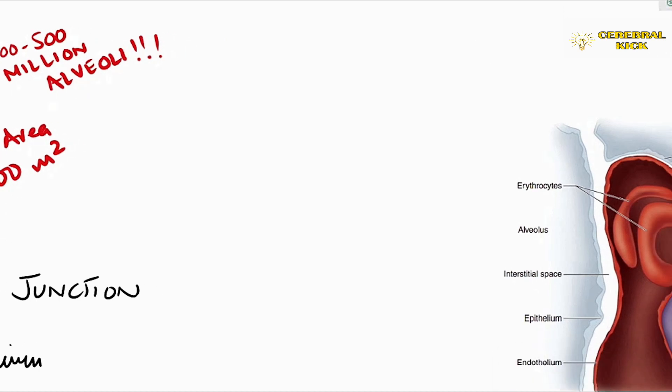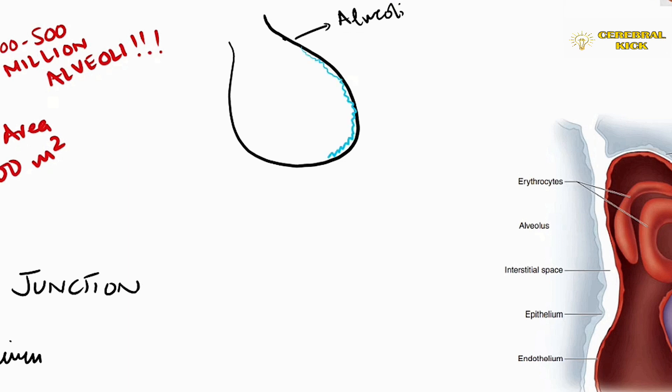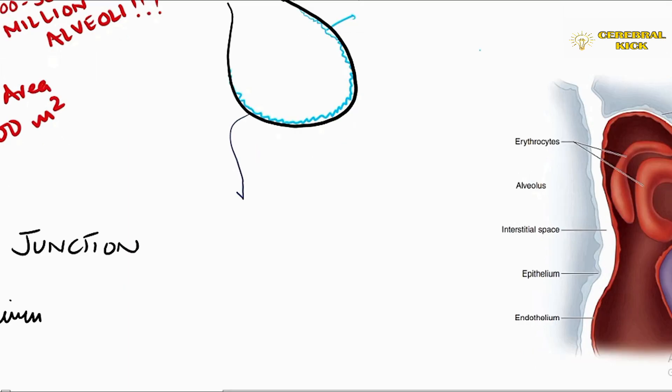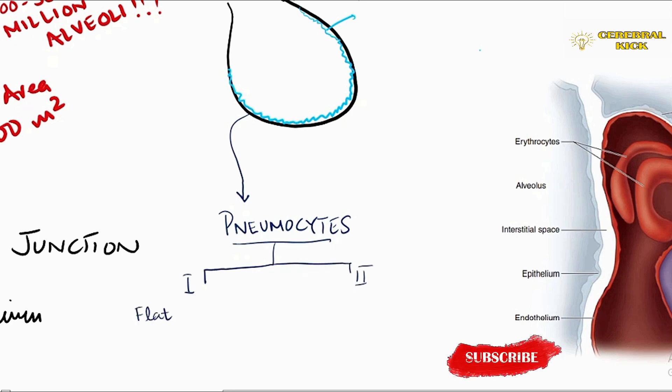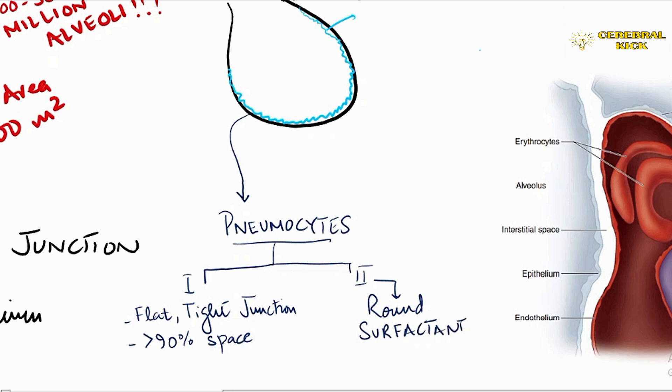In order to understand the logics behind this exchange, the epithelium of alveolus and the endothelium of the capillary needs to be understood. This epithelium is primarily of two kinds called pneumocytes: type 1 pneumocytes and type 2 pneumocytes. Type 1 pneumocytes are flat, they make tight junctions and they occupy more than 90 percent of the space of the alveolus. However they are smaller in number but occupy greater space. Type 2 are primarily responsible for production of surfactant. Every time type 1 alveoli are destroyed, say in ARDS, type 2 can convert into type 1.